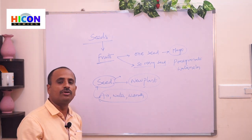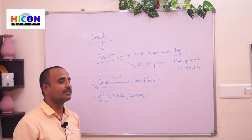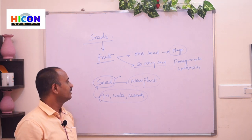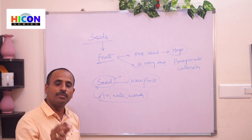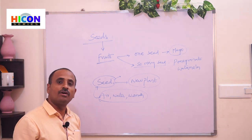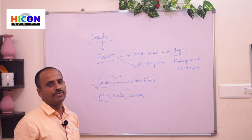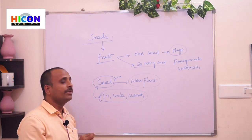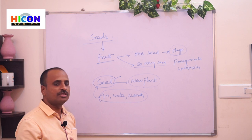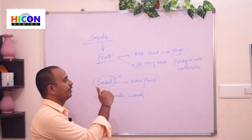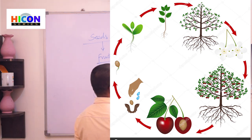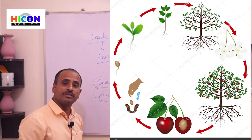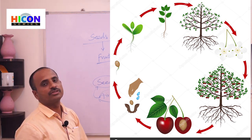Seeds are generally hard because the outer layer is covered with a thick coat. Inside the seed is a small baby plant called embryo. When you plant the seed in soil and give it water and air, the baby plant gets life and grows into a new plant. This total process of growing a seed into a new plant is called seed germination.